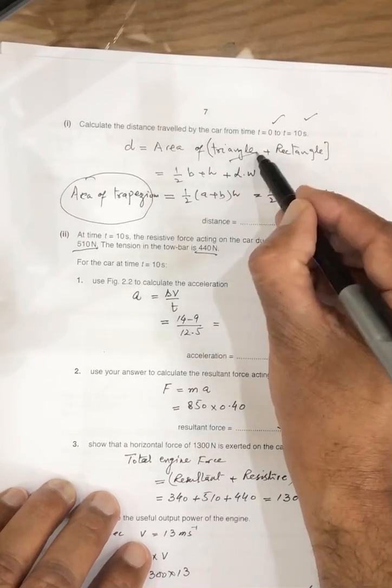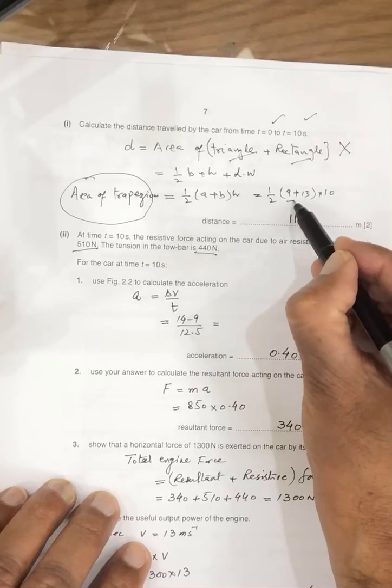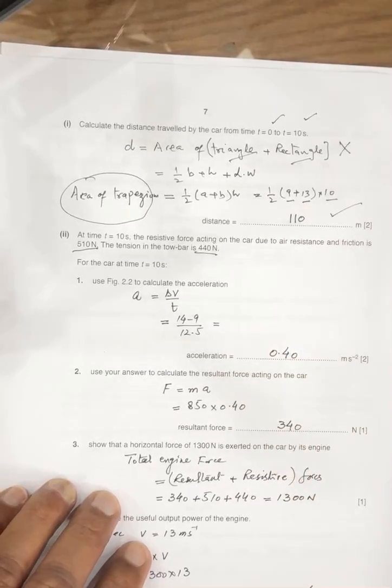From 0 to 10, we have to calculate the area of the trapezium, which is 1 by 2, sum of parallel side, 1 by 2 into height. 1 by 2, 9 plus 13 into 10, so answer is 110.